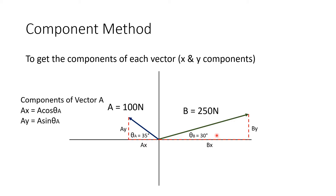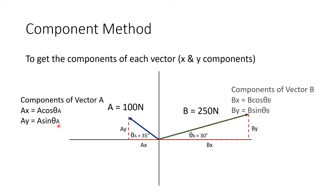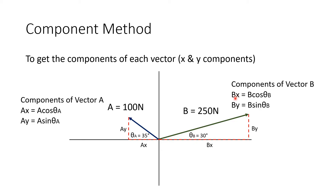To get the components of vector A: Ax, the x component, is equal to A (the magnitude) multiplied by cosine of angle A. And the y component, Ay, equals A multiplied by sine of angle A. For the components of vector B: Bx equals B multiplied by cosine of angle B, while the y component By equals B multiplied by sine of angle B. All we have to do is substitute the values of the vectors' magnitudes and angles A and B.